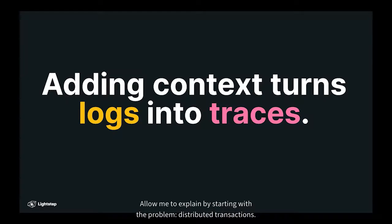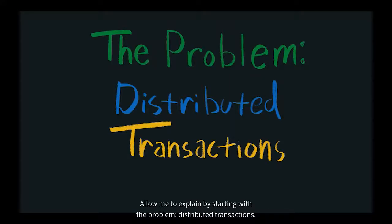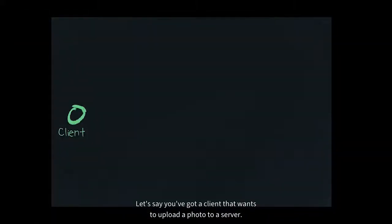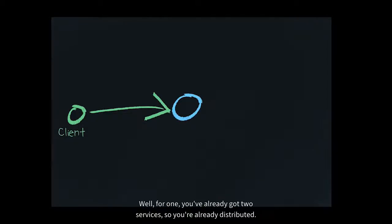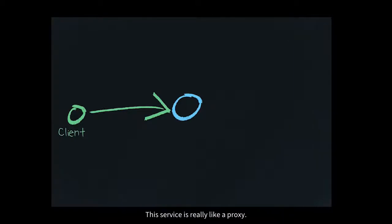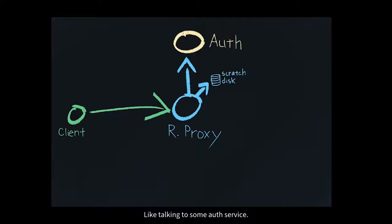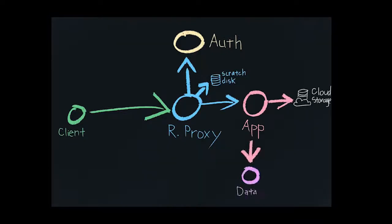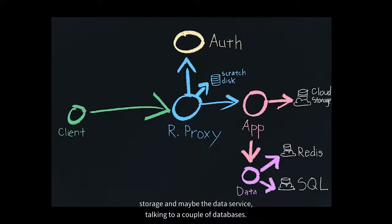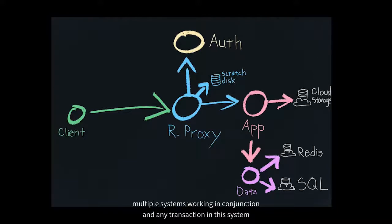Allow me to explain by starting with the problem: distributed transactions. Let's say you've got a client that wants to upload a photo to a server. You've already got two services, so you're already distributed. But it's never that simple — this service is really like a proxy, talking to some auth service, talking to some scratch disk and an app, talking to some cloud storage and maybe a data service, talking to a couple databases. Even the simplest system is actually multiple systems working in conjunction, and any transaction hits multiple different services along the way.